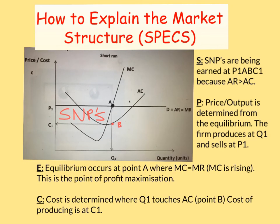E represents the equilibrium, which occurs at point A where MC equals MR. MC is rising — you can see the MC curve intersects MR at this point, and marginal cost is rising. This is the point of profit maximization.